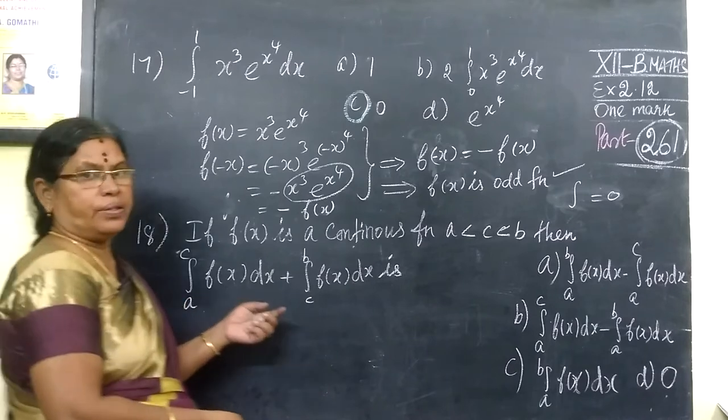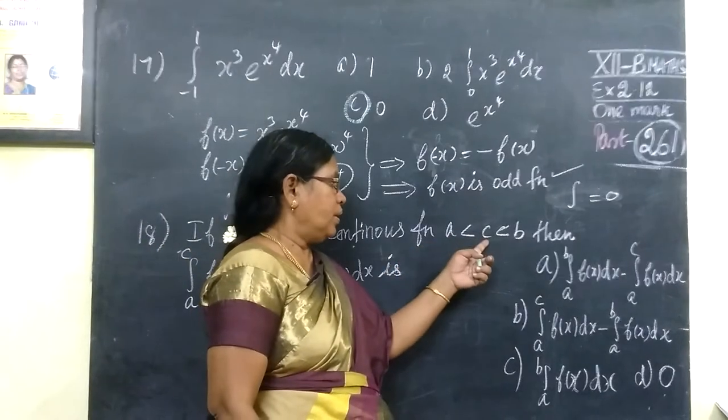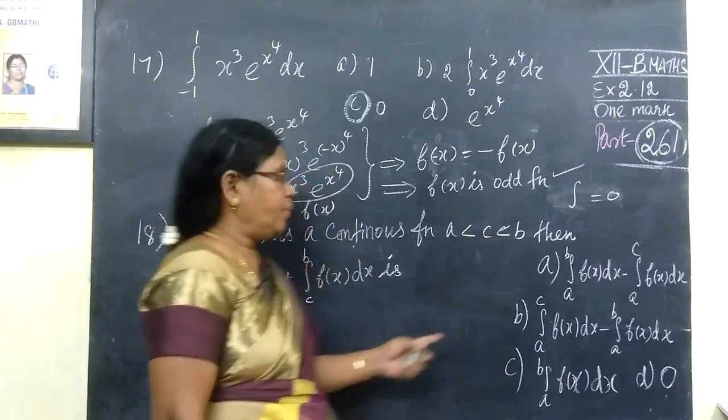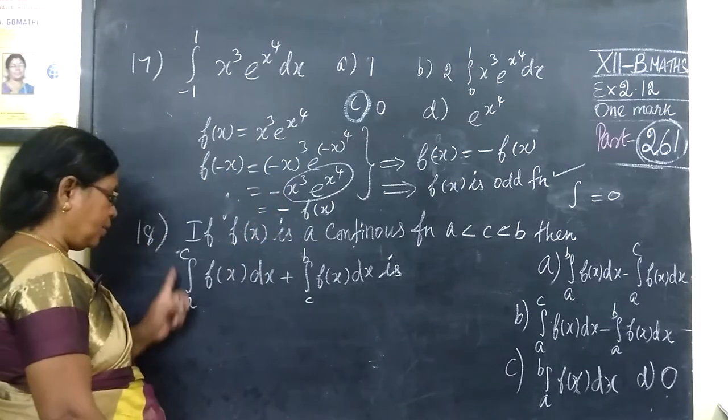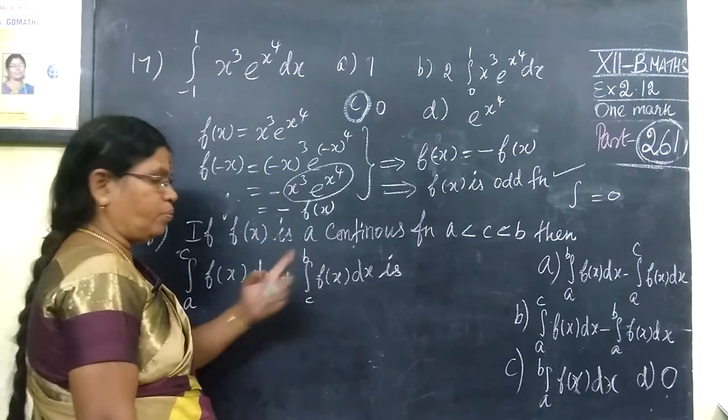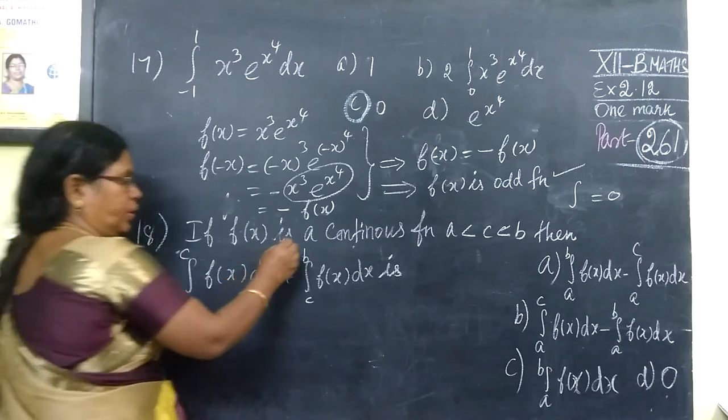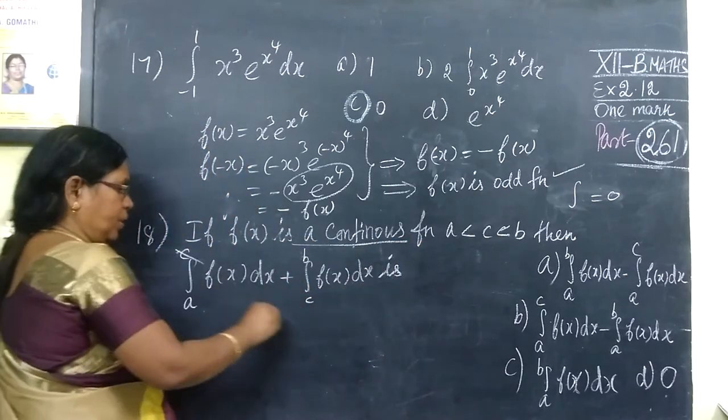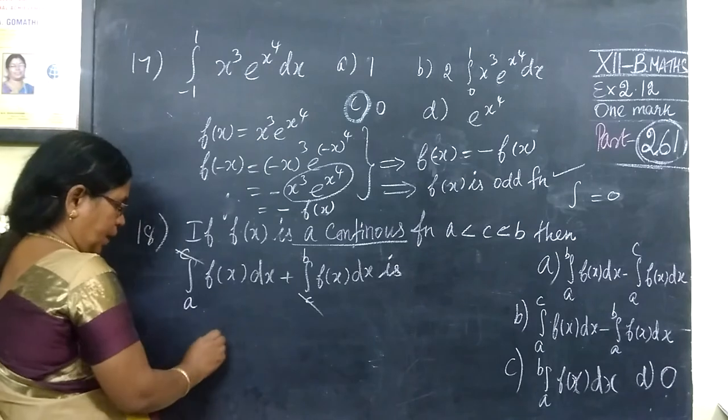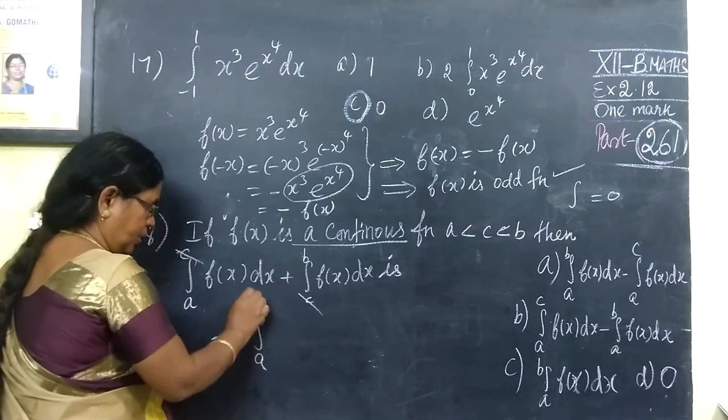If F of X is a continuous function, C lies between A and B. Then, A to C, F of X, dX. This is wrong. If you have the continuous function, if you have the limit, you can slide the integral. A to B, F of X, dA.